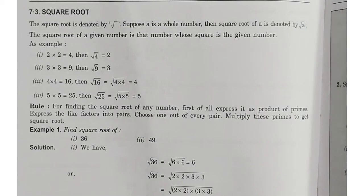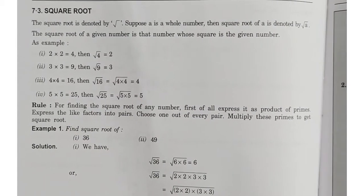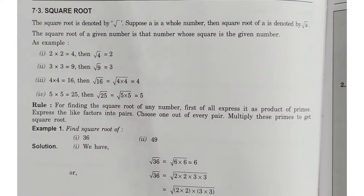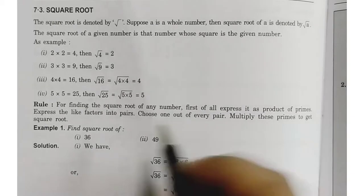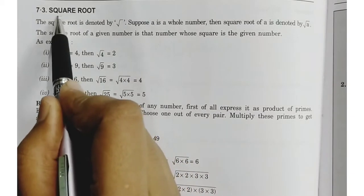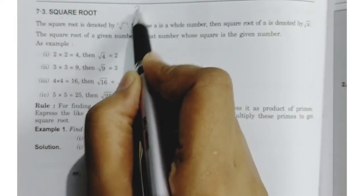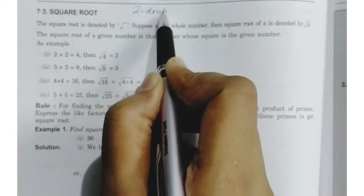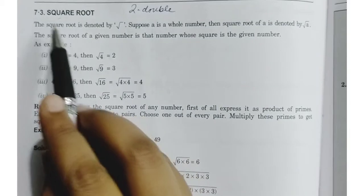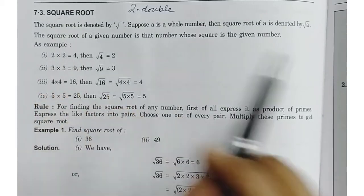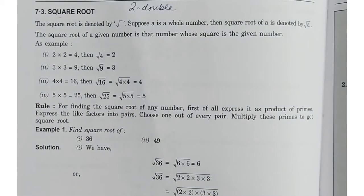Students, before moving further with the questions of exercise 7.1, we will see the square root. So first thing is: what is square root? Square means کیا ہوتا ہے — square means ہوتا ہے 2 یا double. یہ چیز دھیان رکھیں گے — square مطلب ہوتا ہے کسی بھی چیز کا double، یعنی اس کا square.